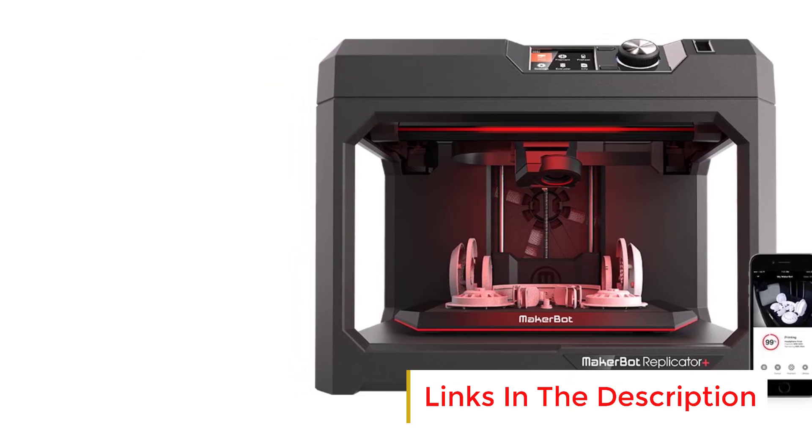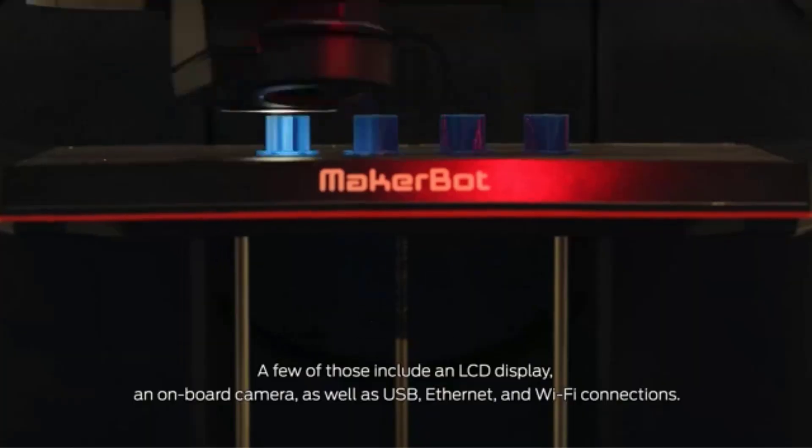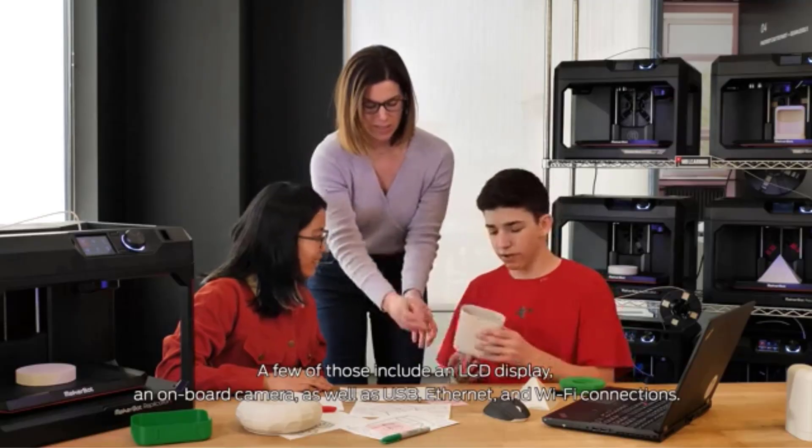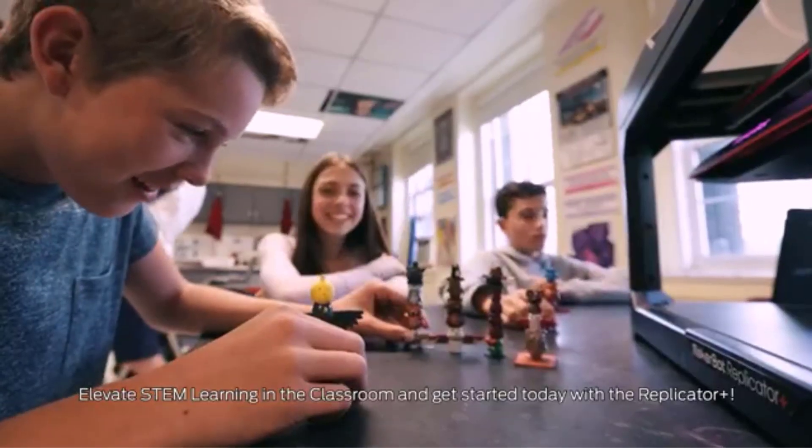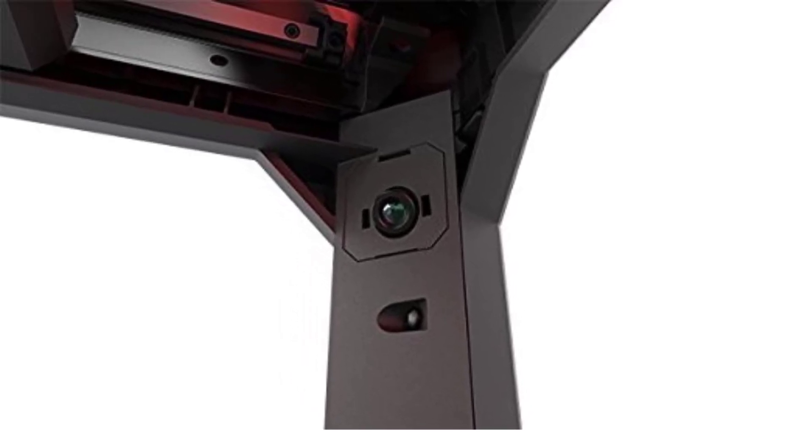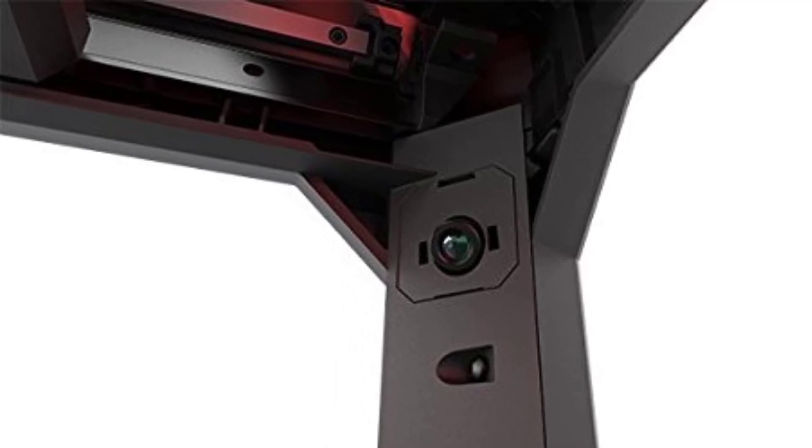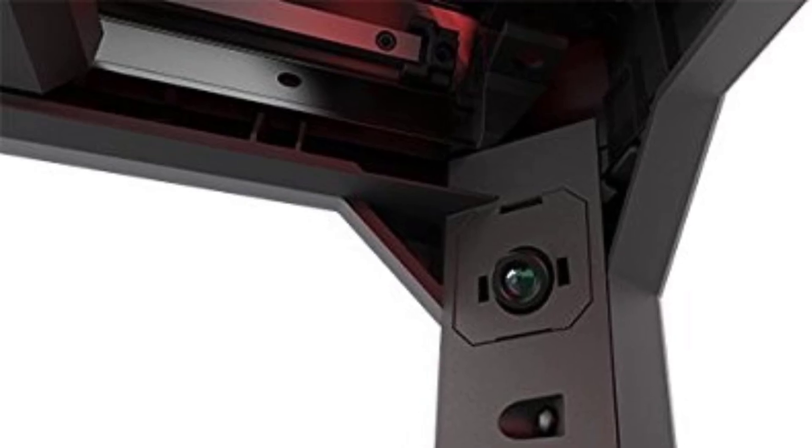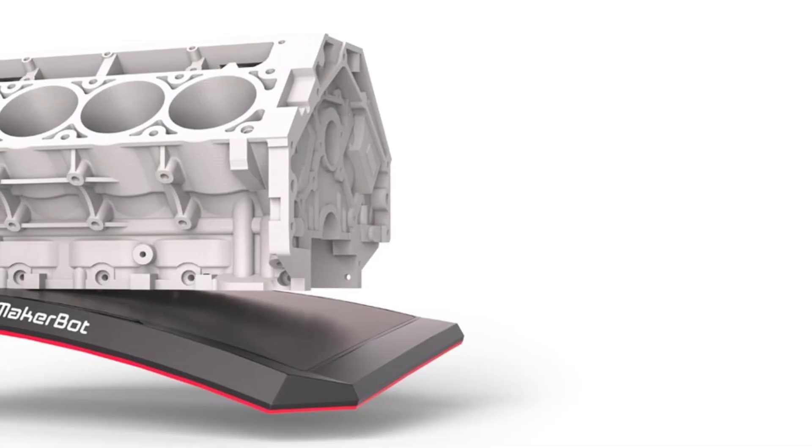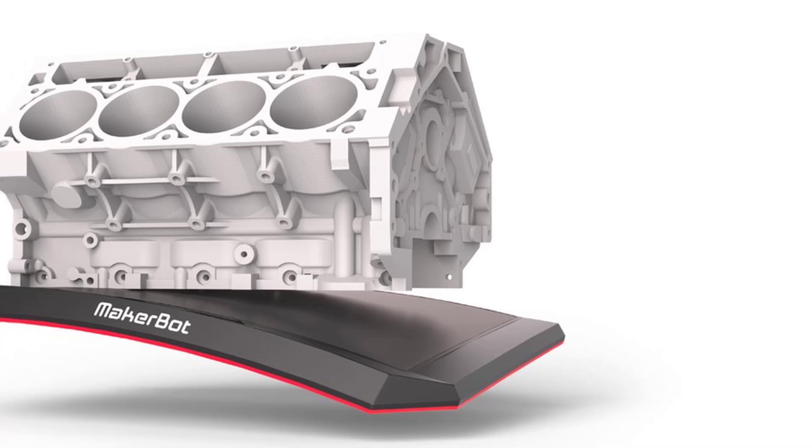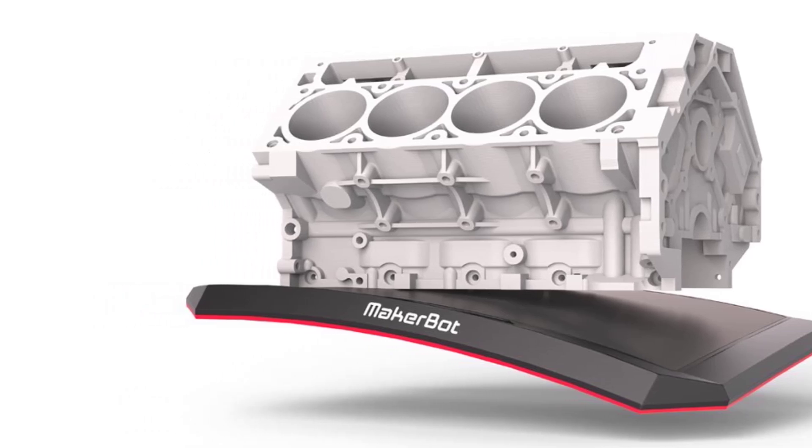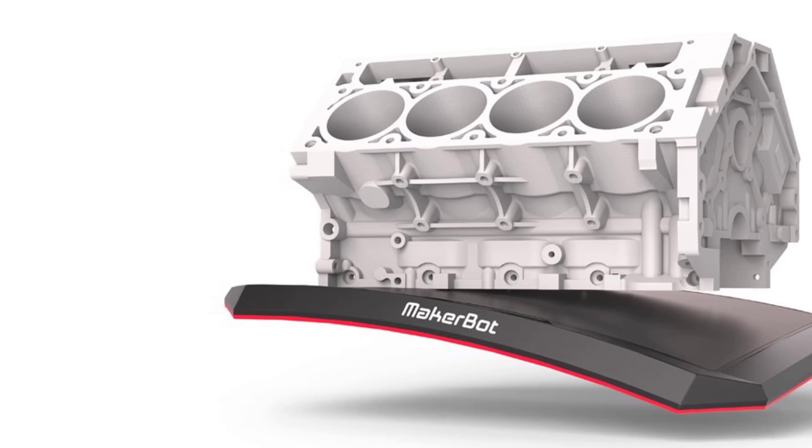The factory-leveled Flex Build Plate simplifies the printing process by eliminating manual leveling, improving first-layer adhesion, and making part removal easier. With a build volume of 11.6 by 7.6 by 6.5 inches, the Replicator Plus allows users to print medium-sized models with precision. It features enhanced motion control and a redesigned gantry, resulting in improved print speed and accuracy compared to previous MakerBot models. The printer is Wi-Fi, USB, and Ethernet-enabled, providing seamless connectivity for remote monitoring and control. It is also compatible with MakerBot print software, which streamlines the 3D printing workflow by optimizing file preparation and print settings.